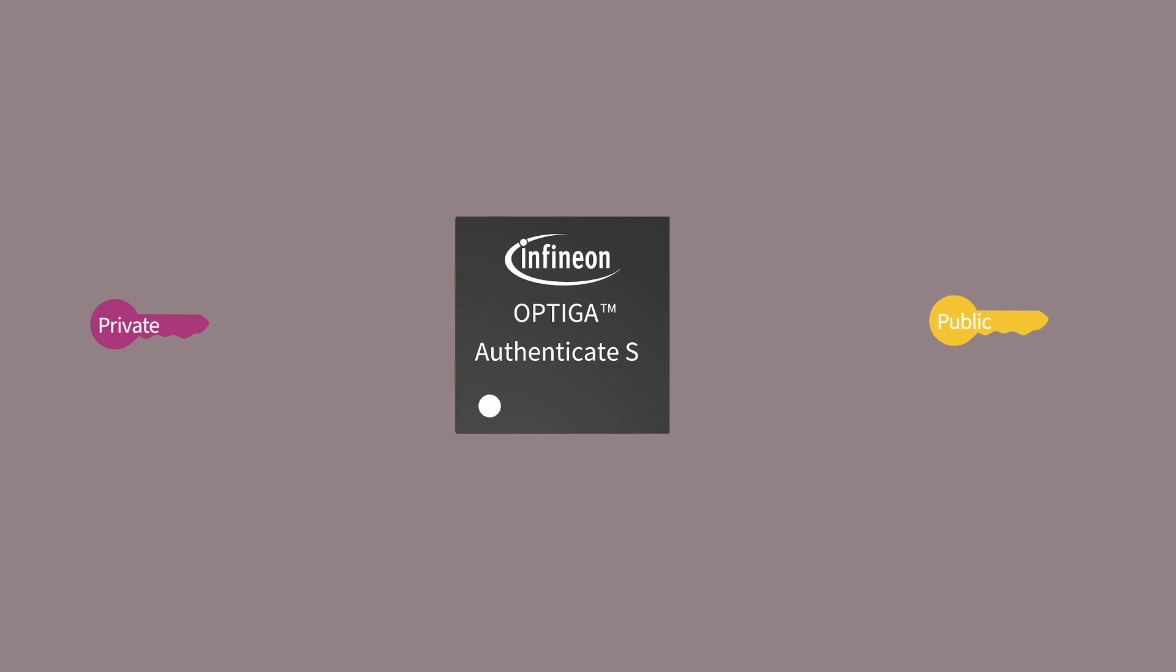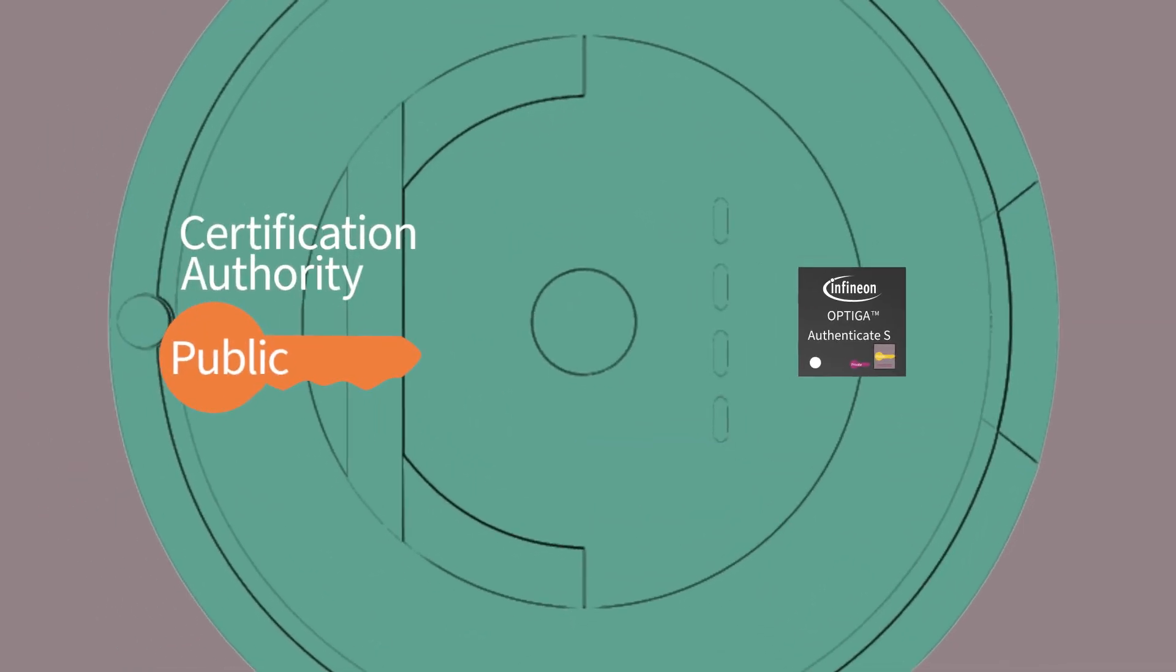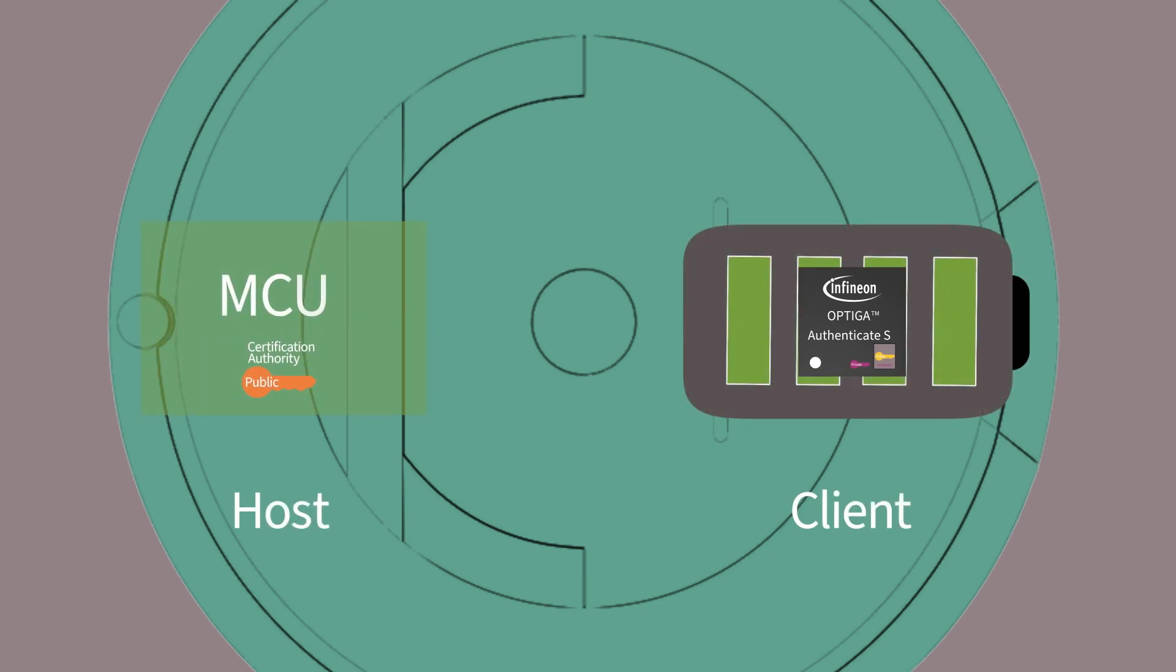The key pair comprises a private key and a corresponding public key. The public key is placed in a certificate that is signed using the private key issued by the certification authority. Infineon is the certification authority. The certification authority, or LEAF public key, is provided to the manufacturer of the floor care robot and is shared within the microcontroller of the host.